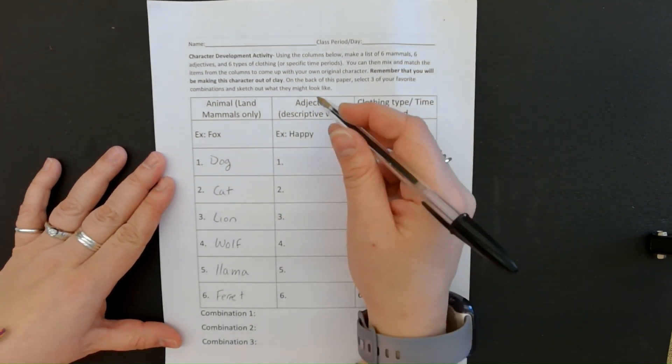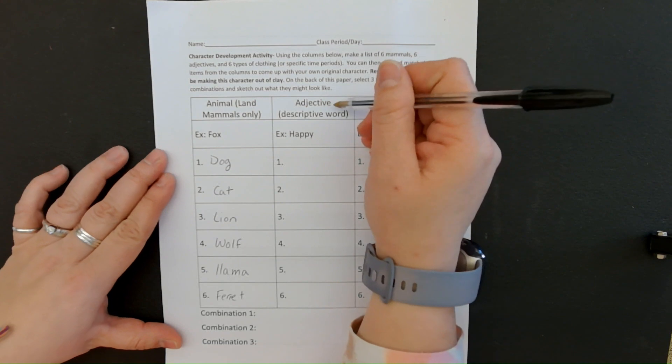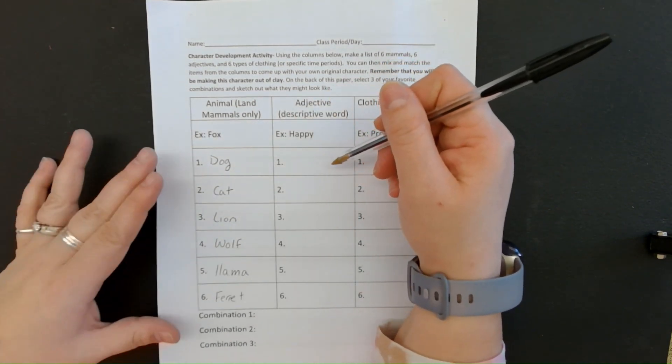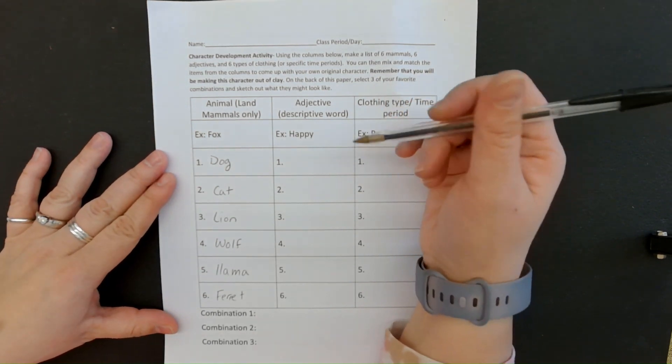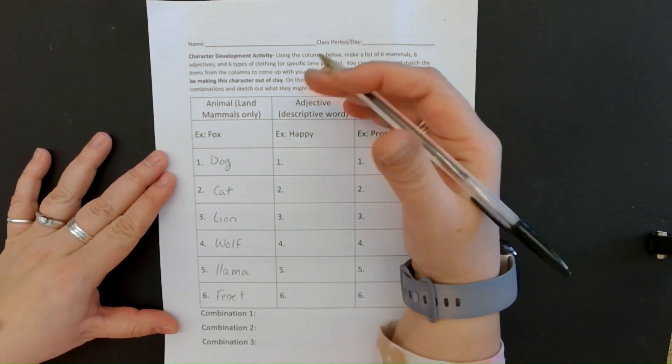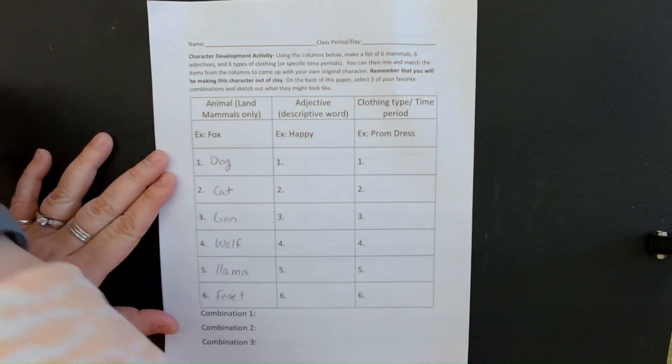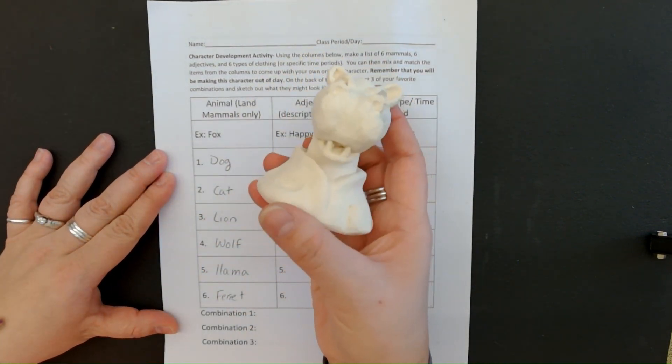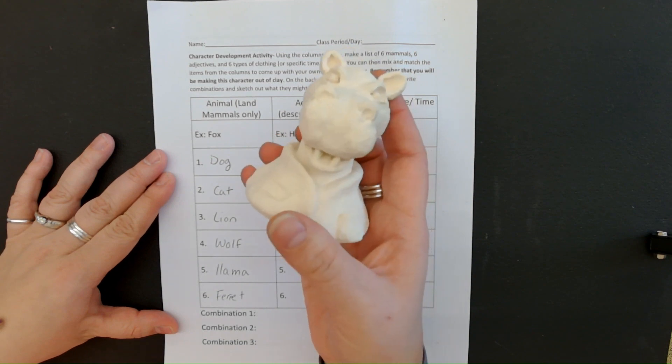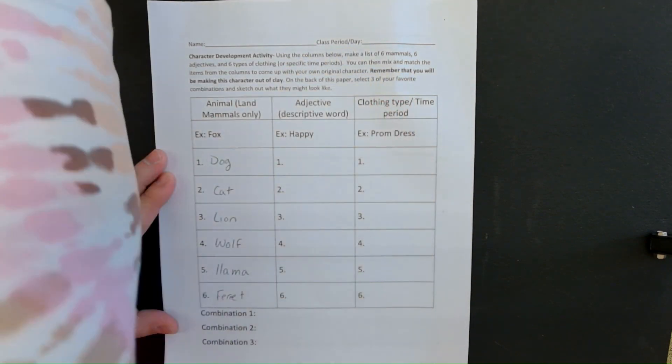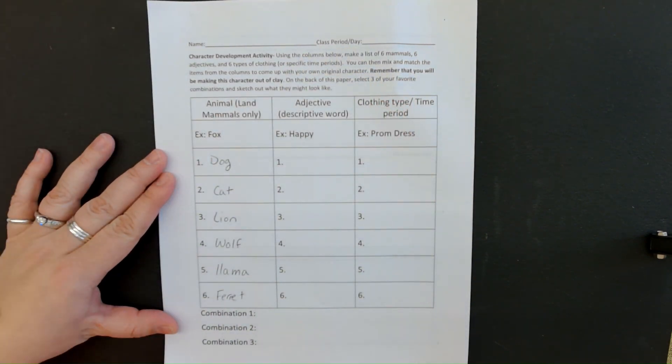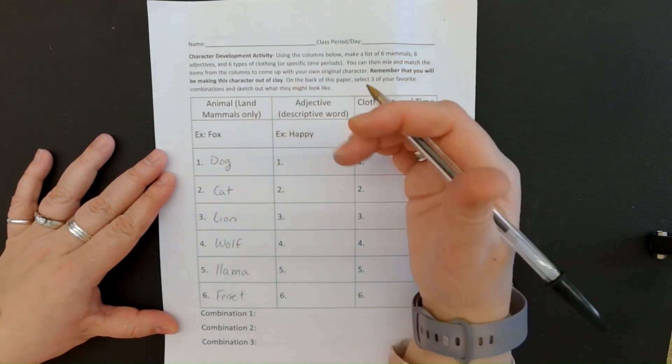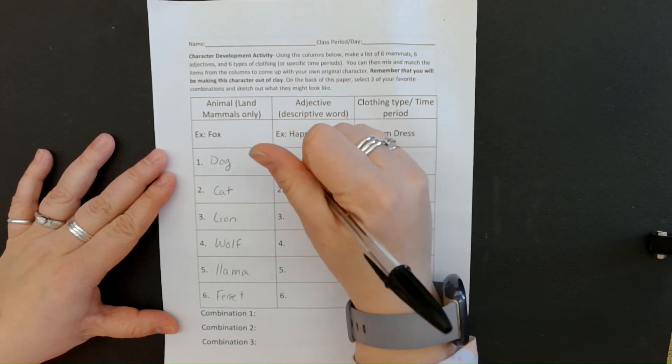Next thing here is we're going to be looking at our adjectives. So adjectives are descriptive words or describing words. You want to pick describing words that are going to be able to show on our character in clay. And remember that for our character, we're only going to be making a bust. So we're going to only be making like a head, neck, and torso. So you want to make sure that your adjective can show in a head, neck, or torso, and it can be described and created using clay.